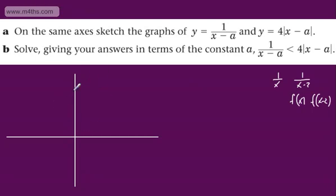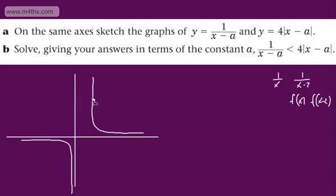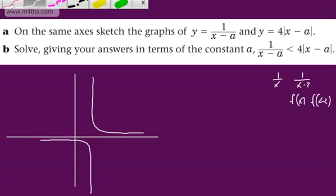We're going to end up with something looking like this on one side, and then the other side looks like that — that is the graph of 1/x. All we've done is move this a units to the right, and what we've got is an asymptote here.